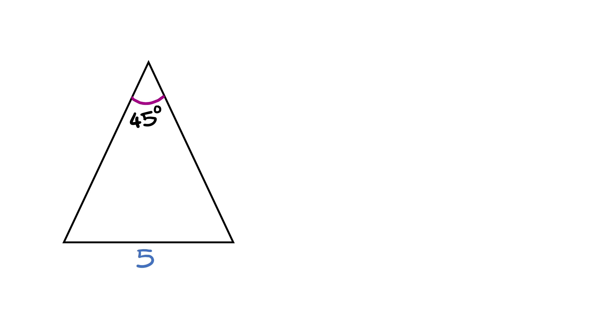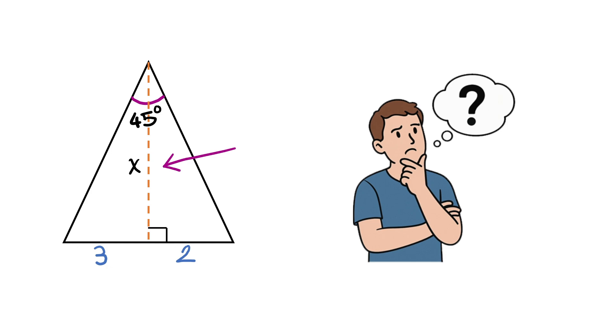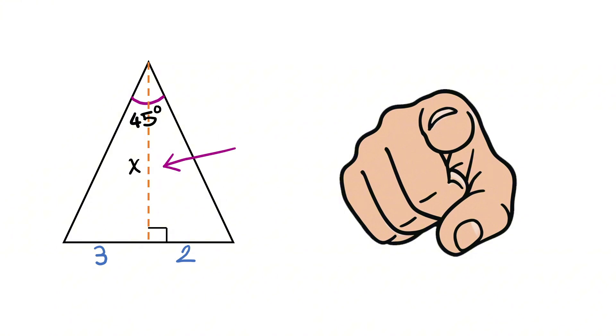Now, when we draw a perpendicular line from this vertex to this side of the triangle, we get this side length as 2, and this is 3. If the length of this perpendicular line is x, our job is to find the value of x. So, can you solve it?